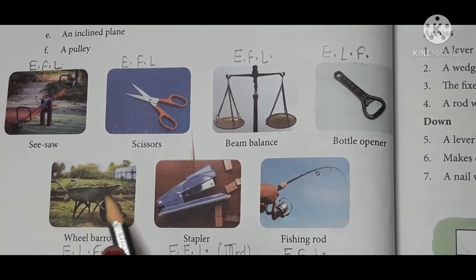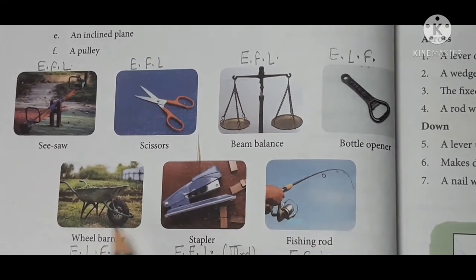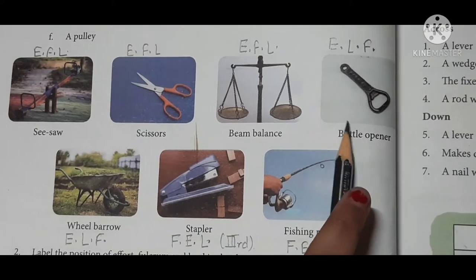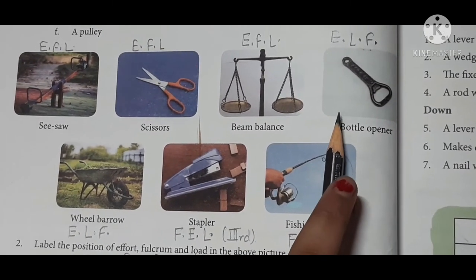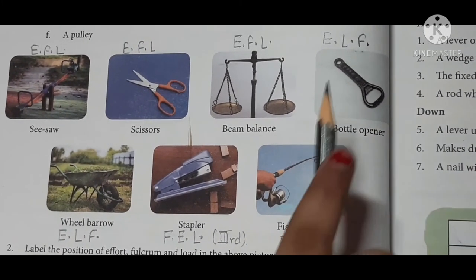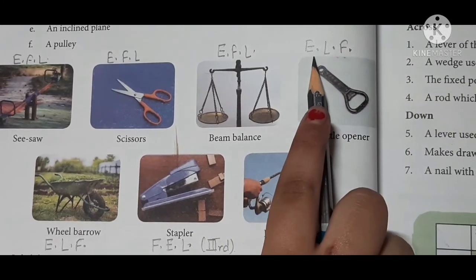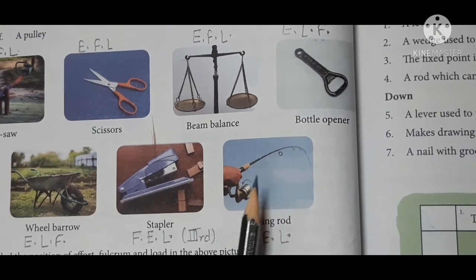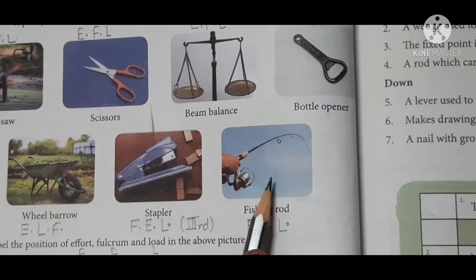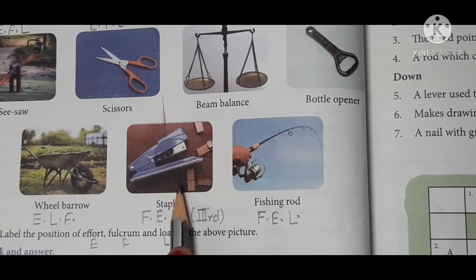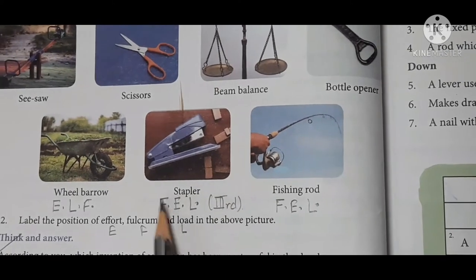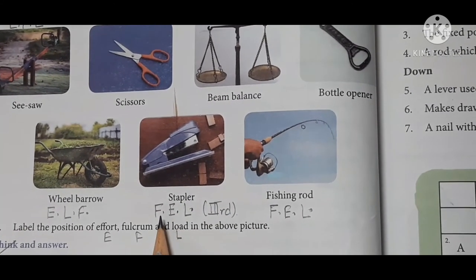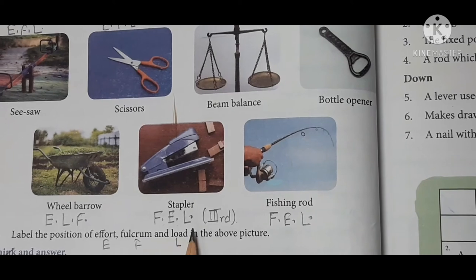Then the two examples, bottle opener and wheelbarrow. These are the examples of second class lever. Their position is effort, load and fulcrum. Then let's come to the last two pictures, which are the examples of third class lever. The position is fulcrum, effort and load.